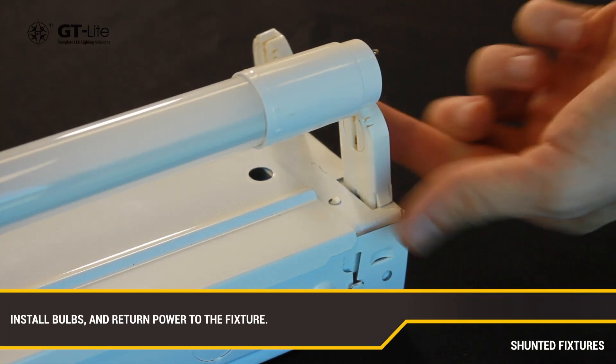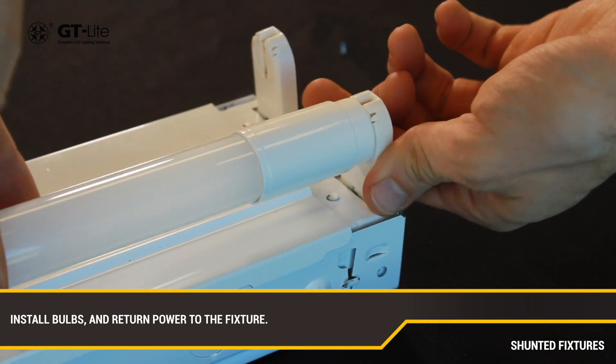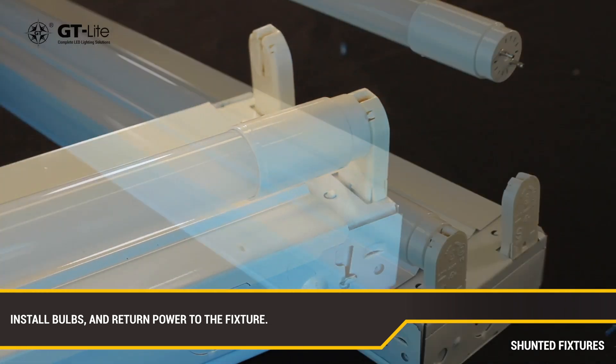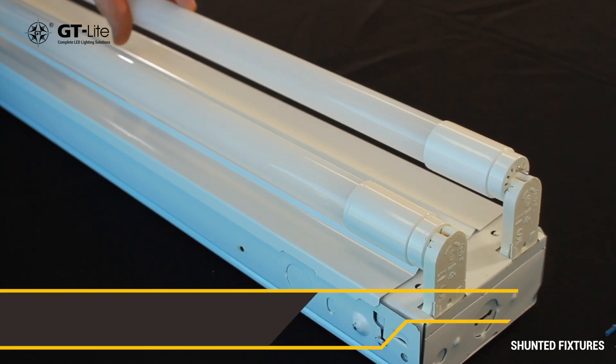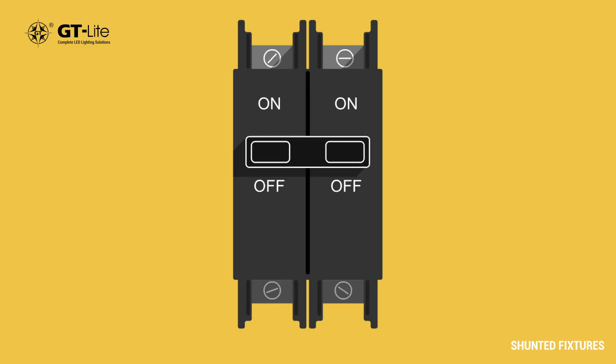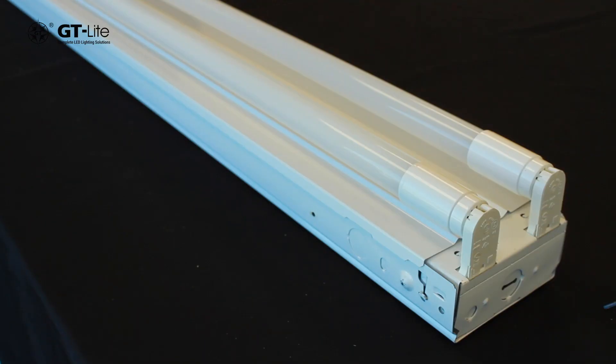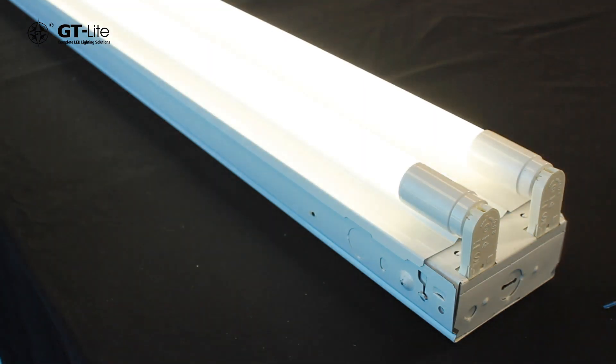Install the bulbs into the bypass fixture and reconnect the power. Test that the bulbs turn on properly. If there is any flickering, double-check all the wire connections or call the manufacturer.